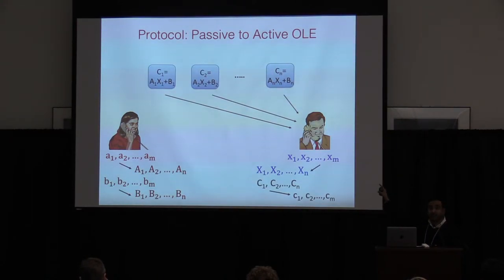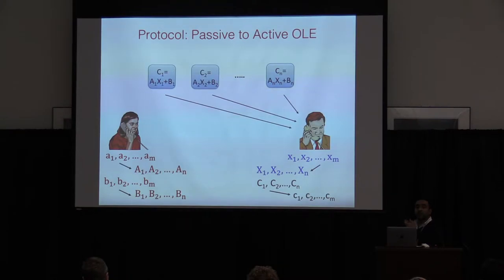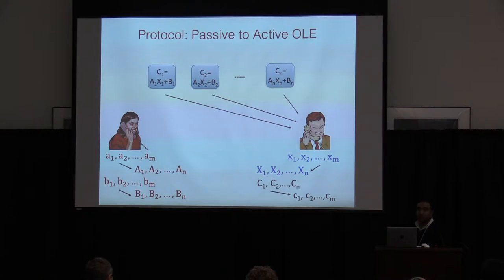The cost of this whole protocol — the number of passive OLEs needed to emulate it — equals the number of servers. If I want to do M OLEs, I encode to N servers. What we care about is the ratio N divided by M. We show that for M large enough, like close to half a million, this ratio becomes two. Even for smaller values it is not too high.